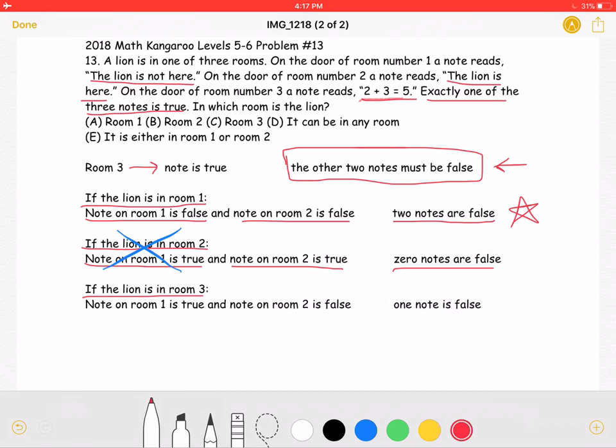If the lion is in room 3, that would make the note on room 1 true and the note on room 2 false. That would make only one note false, which again, we want two notes to be false. So the lion is not in room 3.